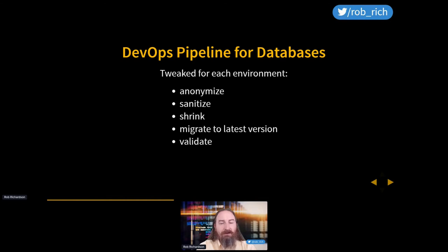Once we get that data into the new environment, we're going to migrate the schema to the latest version and ultimately run our SQL tests or integration tests to validate the database behaves as expected. Our DevOps pipeline then has these steps: anonymize, sanitize, and shrink; migrate to the latest version; and validate that the data is correct.